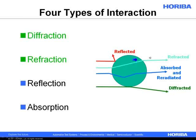Refraction becomes important when the particle size becomes smaller — some multiples smaller than the wavelength of light. That's where the light passes through the particle, changes angle a few times, changes intensity a few times, and we can collect that information as well. We don't like reflection and absorption simply because it's where we lose the signal. Reflection is where the light hits the surface of the particle and reflects back — an easy mental example is something like gold dust. This has very little meaning for size.